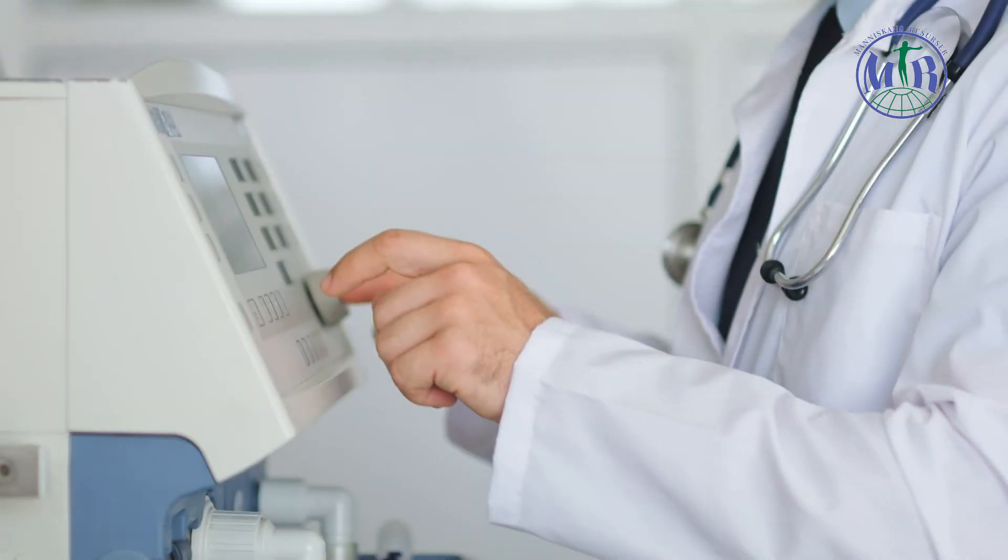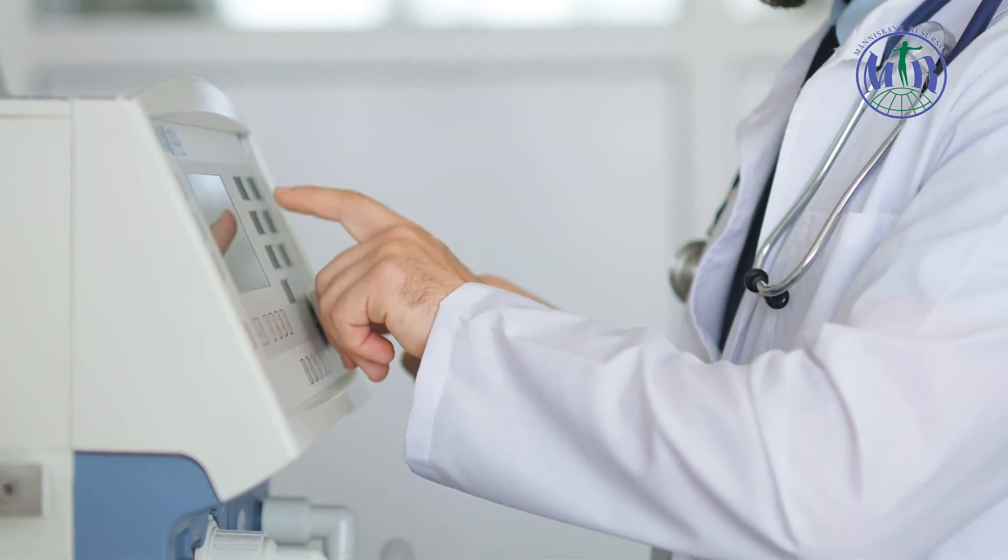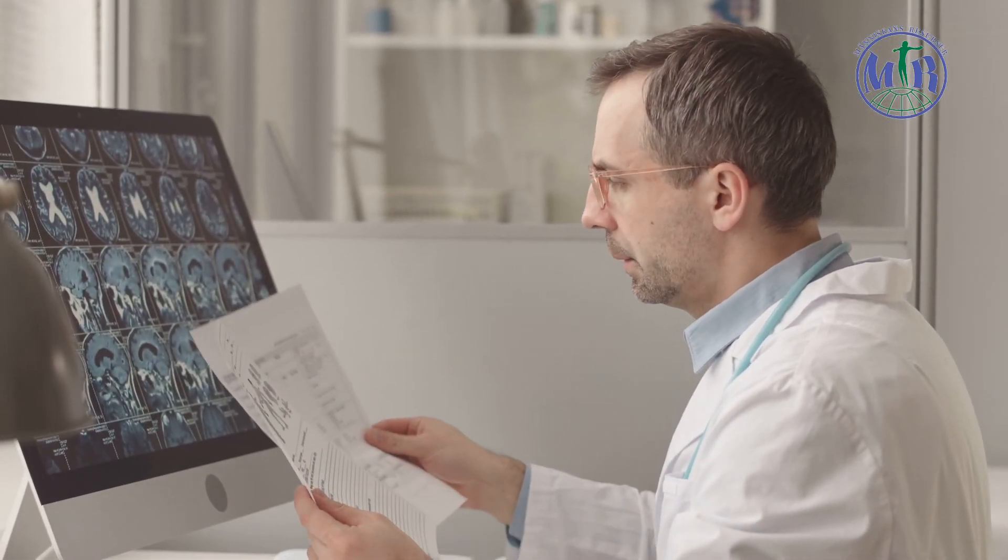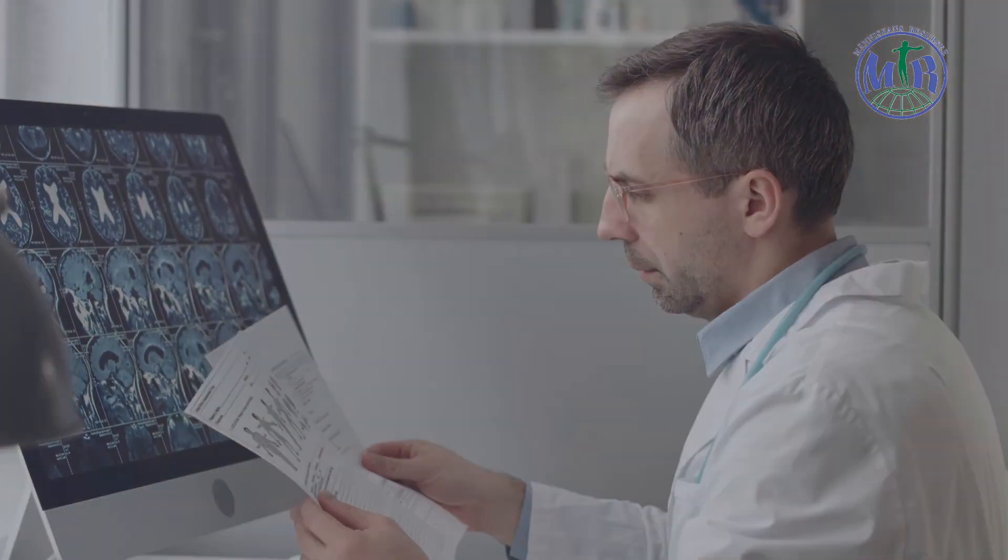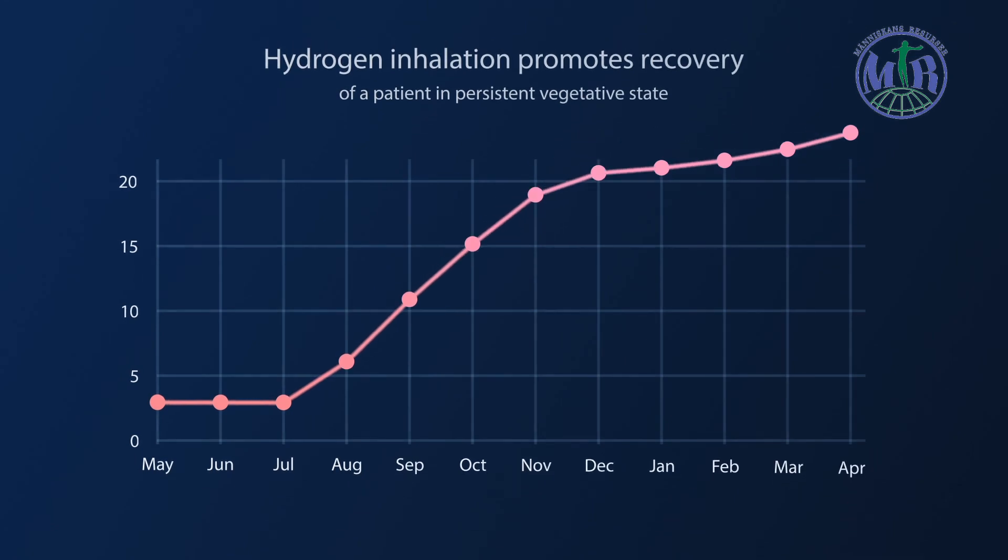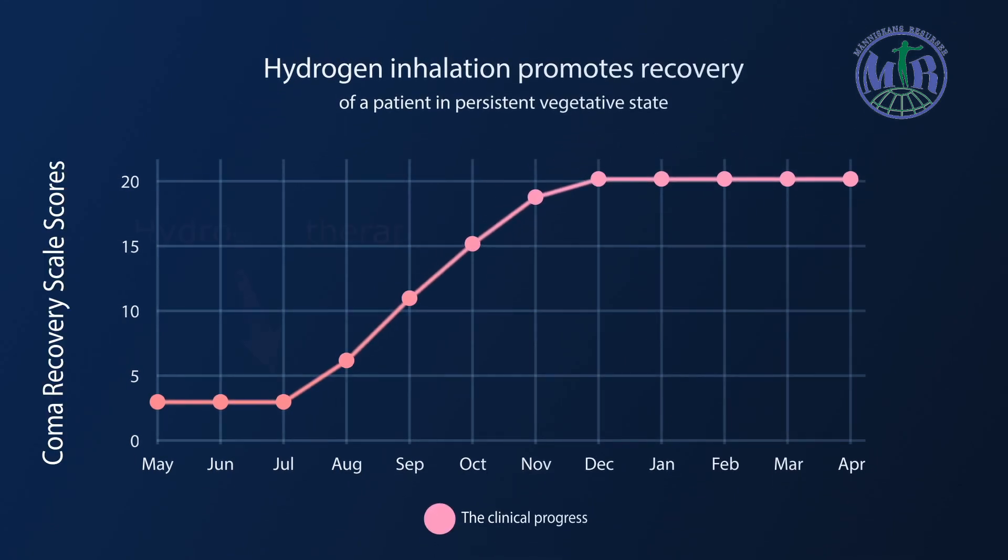Thereafter, the patient's parents agreed to a hydrogen inhalation treatment, which was given two to three hours twice per day. To the doctor's astonishment and the parent's joy, the patient's condition began to improve from the very first month of hydrogen therapy, as we can see in this chart.